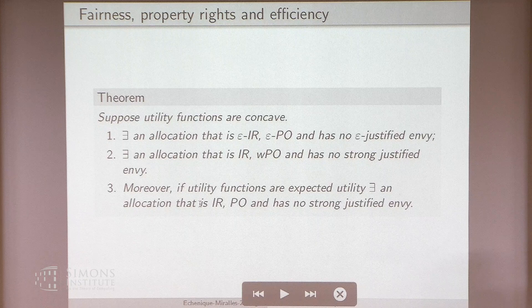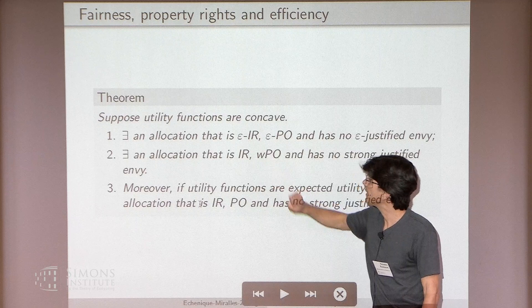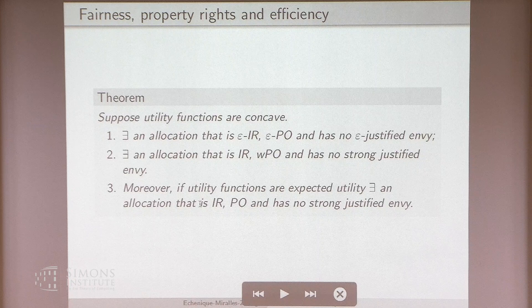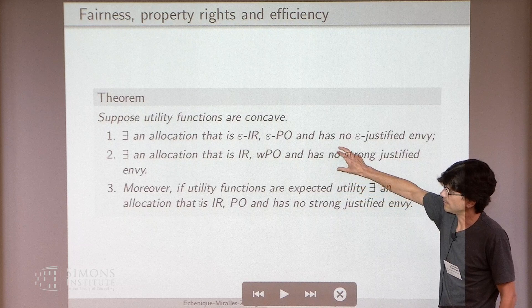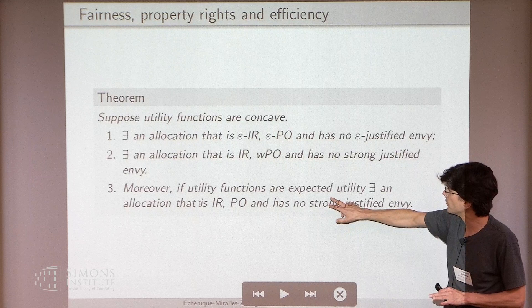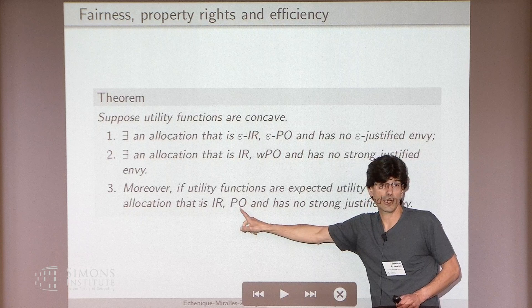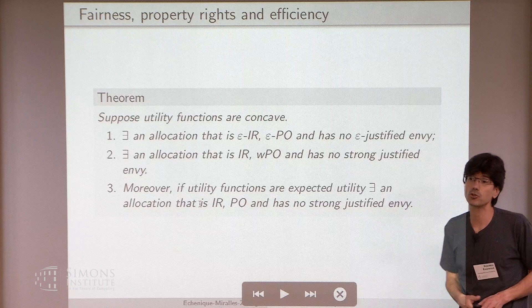Here's the first theorem: if utility functions are concave, then there exists an allocation that is epsilon-individually-rational, epsilon-Pareto-optimal, and has no epsilon-justified envy. Taking epsilon to zero, there exists one which is individually rational, weakly Pareto-optimal, and has no strong justified envy. Moreover, if utility functions are expected utility, one can do a totally different proof: there exists an allocation which is individually rational, Pareto-optimal — not just weakly Pareto-optimal, which is a big deal — and has no strong justified envy. But that one requires expected utility.